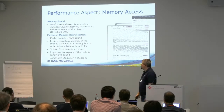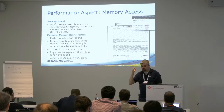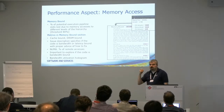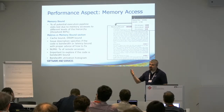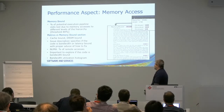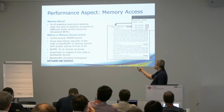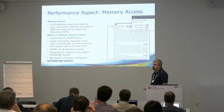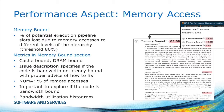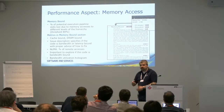Memory bound: what it tells you is how many cycles in the execution pipeline are going into memory accesses — how many cycles are lost because you're waiting for memory. It tells you if your code is cache or DRAM bound. It tells you for a NUMA system the number of remote accesses coming from a remote NUMA socket. It also shows a bandwidth utilization histogram so you can see if you're maxing out the memory bandwidth and if you do that all the time. In real applications, there are spikes in memory bandwidth usage, and you can look at those drops to see what the code is doing while it is not using all the available memory bandwidth.